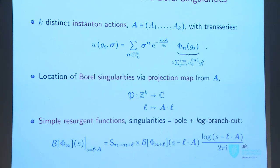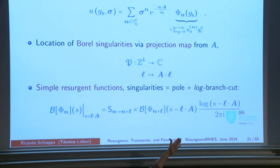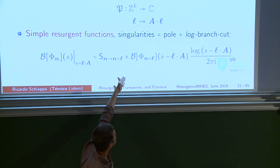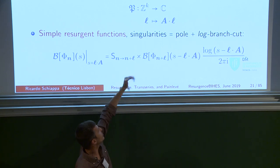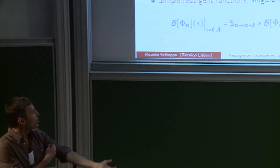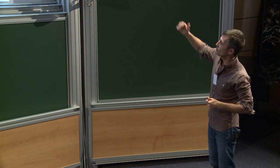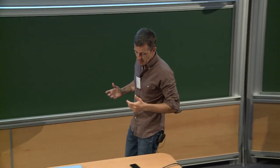In these problems, the resurgent functions are all simple resurgent functions, which means singularities are simple — only pole and logarithmic branch cut types. Focusing on the log singularity: at the L singularity of the N-instanton sector, there is a log branch cut, which is a specific projection from the Z^k lattice. Then I see the resurgence of the N+L sector in the trans-series, with a coefficient in front — we call it the Borel residue. That tells us how to go from the N-th to the (N+L)-th sector.